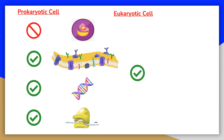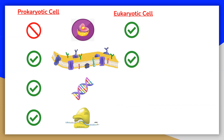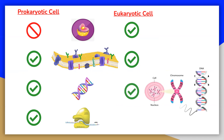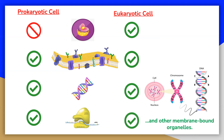Eukaryotic cells have a nucleus surrounded by a nuclear envelope. The nucleus holds the eukaryotic cell's DNA. A typical eukaryotic cell is surrounded by a plasma membrane and contains many different structures and organelles with a variety of functions. Eukaryotic cells possess a membrane-bound nucleus that holds DNA in the form of chromosomes. In eukaryotic cells, the ribosomes are bigger, more complex, and bound by a membrane.